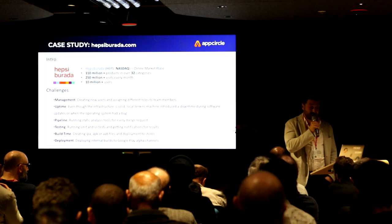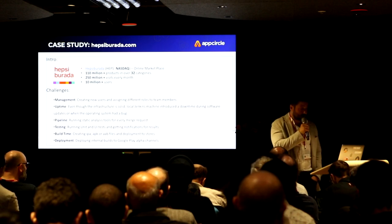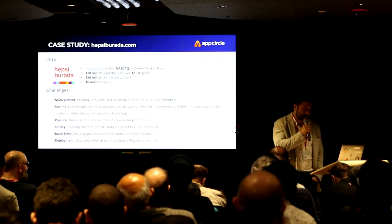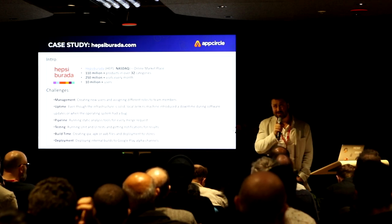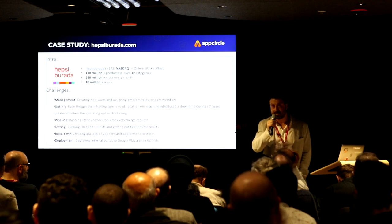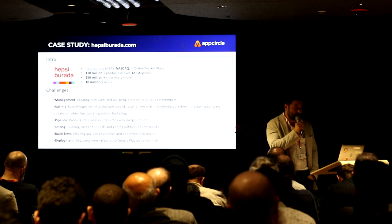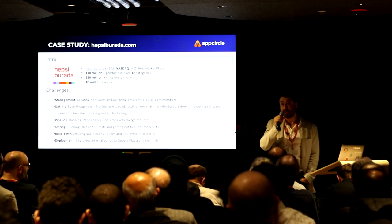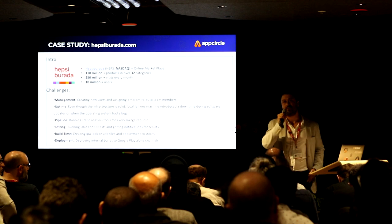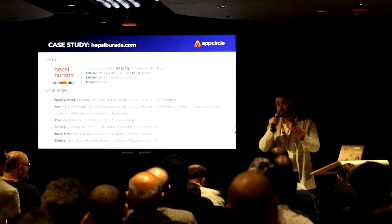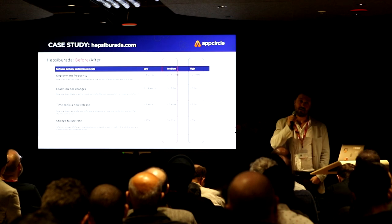They introduced downtime during software updates and when the operating system had a bug. Another problem was the pipeline running static analysis tools for every merge request, which caused problems for testing as well. Their build times were not okay because of some complexities and caching problems in their workflows. They also faced issues with deployment to the Google Play alpha channels, and they had internal KPIs that were not exactly matching their workflows on the publishing process to the Google Play.